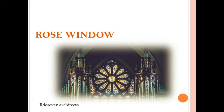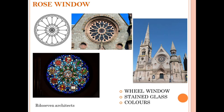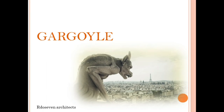Rose window. The rose window is often used as a generic term applied to circular windows. The windows are divided into segments by stone mullions and tracery. Rose windows are also known as wheel windows. In Gothic buildings, rose windows used tracery with stained glass. Stained glass windows are one of the most important features of Gothic architecture, and they mostly use primary and secondary colors.